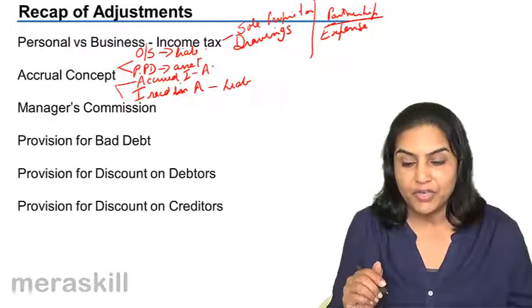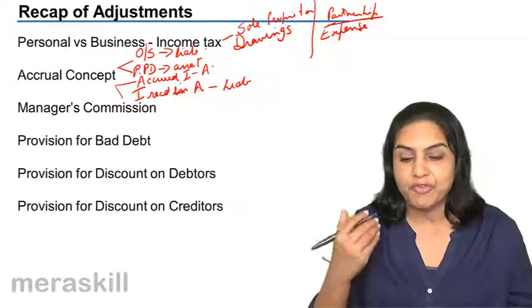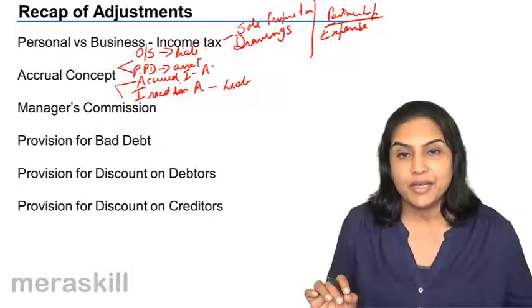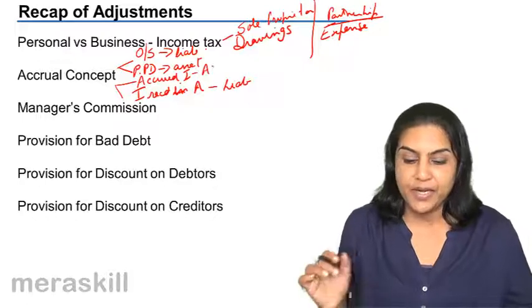If we have earned but not received, it should come in. If we have received income in advance, we should remove that and show it as a liability in the balance sheet.